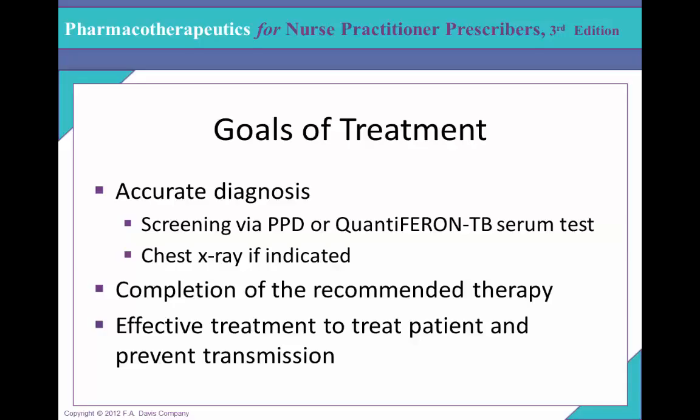Diagnosis is done by chest X-ray, acid-fast stain and culture, tuberculin skin test or interferon gamma release assay, and when available, nucleic acid-based testing. Patients can be screened via PPD or QuantiFERON-TB serum test. Pulmonary TB is often suspected based on chest X-ray taken while evaluating respiratory symptoms such as cough for more than three weeks, hemoptysis, chest pain, pleuritic pain, dyspnea, unexplained illness, fever of unknown origin, and of course a positive PPD.